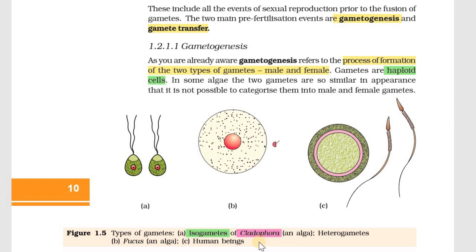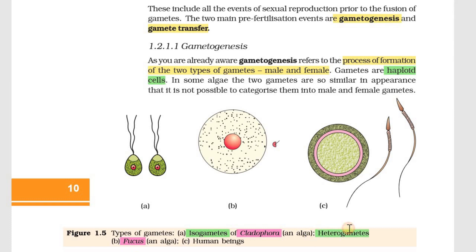What are isogametes? Now, when gametes are morphologically different from one another – one type is the female gamete and another type is the male gamete – they are different gametes. That is why we call them heterogametes. Hetero means different – there are different gametes in different structures.